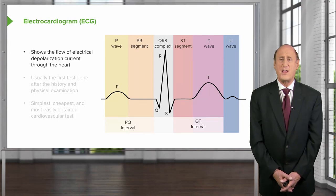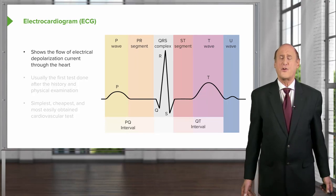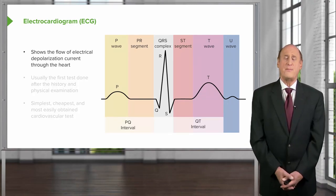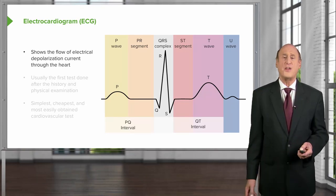The T wave is the repolarization wave, and then as I mentioned, the U wave is often not present but may be present as a very small wave following the T wave.